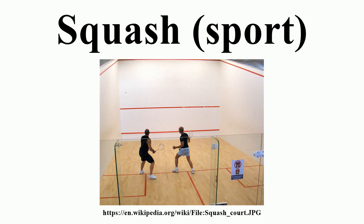Squash scoring systems have evolved over time. The original scoring system is known as English Scoring, also called Handout Scoring. Under this system, if the server wins a rally they receive a point, while if the returner wins the rally, only the service changes and no point is given. The first player to reach 9 points wins the game. However, if the score reaches 8 to 8, the player who was first to reach 8 decides whether the game will be played to 9 or to 10.